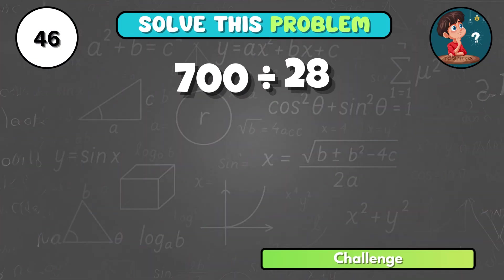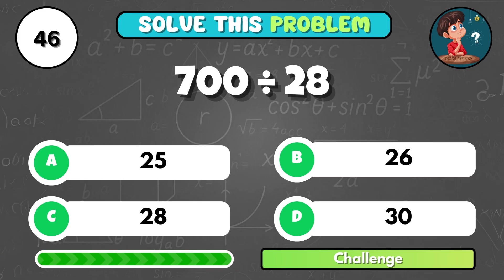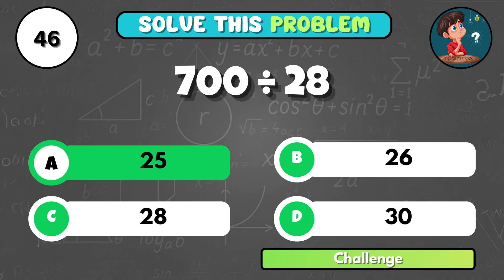What is 700 divided by 28? That's A, 25.